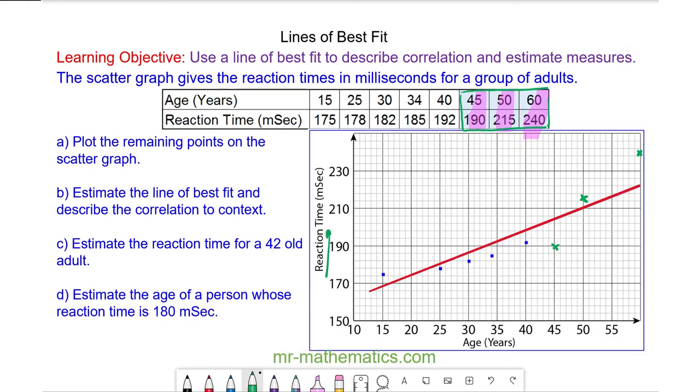To describe this trend in context, we would say as our age increases our reaction time slows, and we can use our line of best fit to estimate the reaction time for a 42 year old adult.